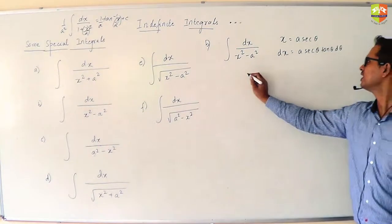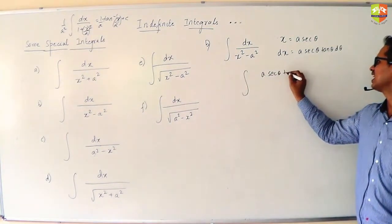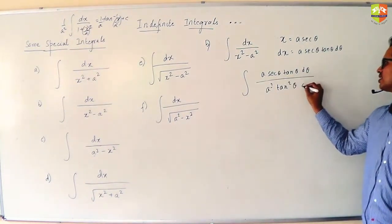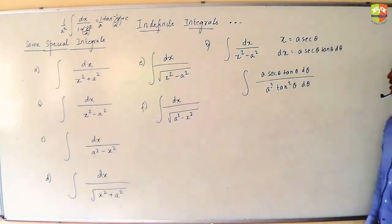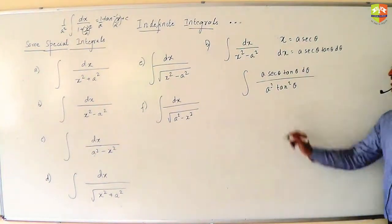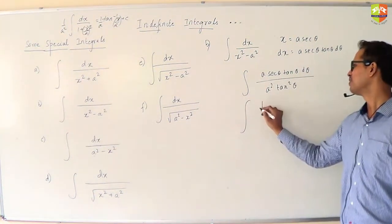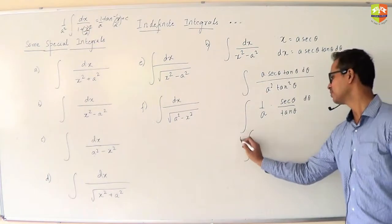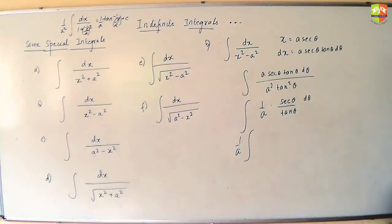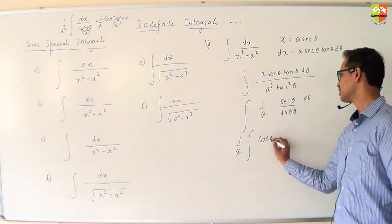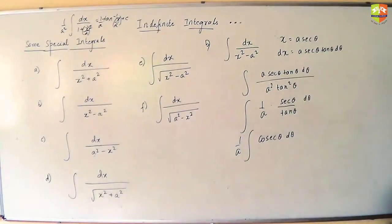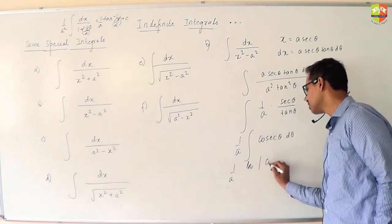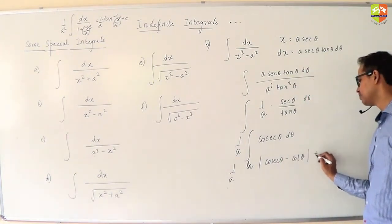Now, if I substitute it here, I get numerator as a sec theta tan theta d theta. Whereas, can I say denominator becomes a squared tan squared theta? So it becomes 1 by a sec theta by tan theta. This becomes 1 by a cosec theta d theta.